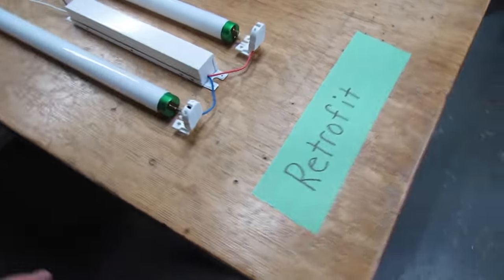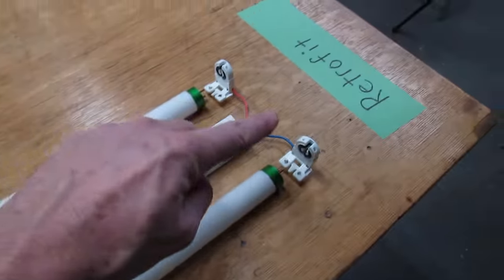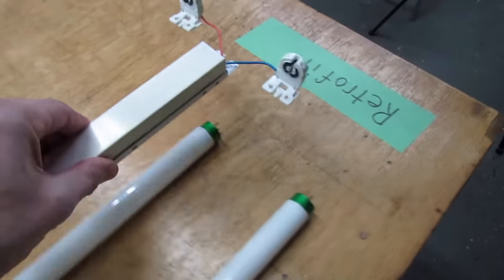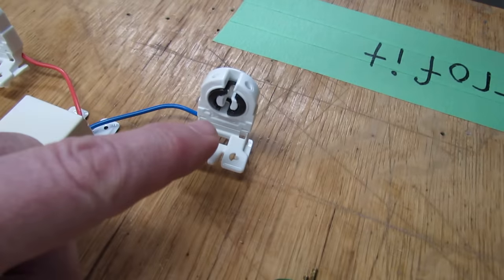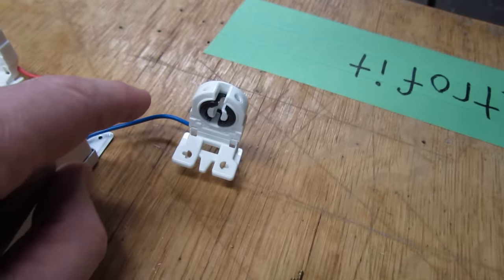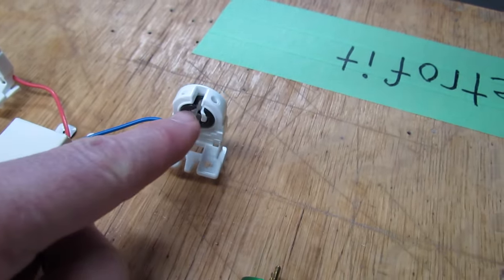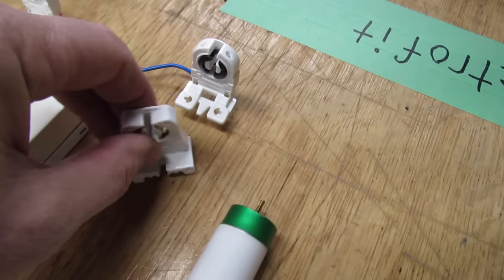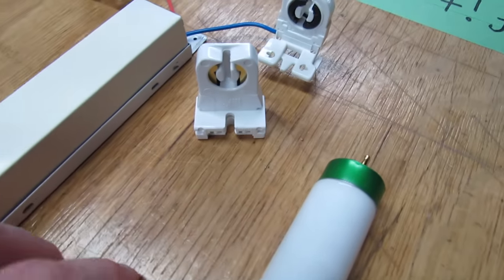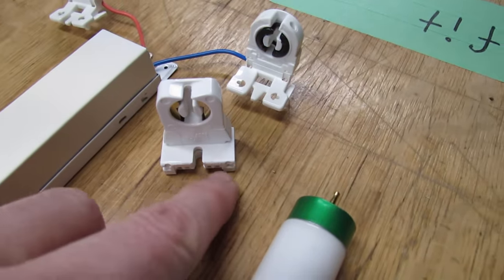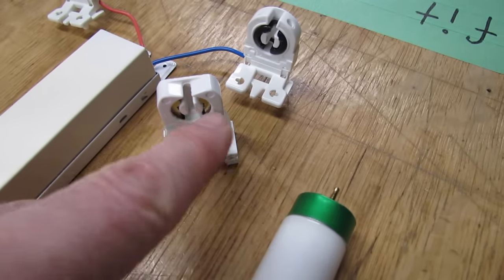When you do a retrofit, you remove the ballast and the connectors at the end because you don't need them anymore. These connectors are called shunted—they have one wire going to both terminals. You'll replace them with non-shunted connectors, which have a circuit going to each side of the terminals.